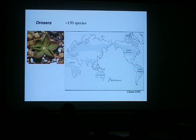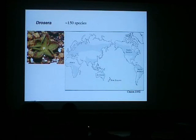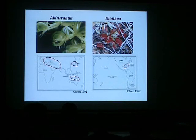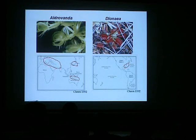Drosera has a worldwide distribution, but the vast majority of species are found in the Southern Hemisphere, especially in Australia, South Africa, and South America. Drosera have affixed traps and capture their prey with mobile glandular hairs present on the adaxial side of the leaves. Drosera and Aldrovanda share similar trapping mechanisms called a snap trap. Aldrovanda is a floating aquatic species found throughout the Old World, while Dionaea is a terrestrial plant endemic to coastal plains of North and South Carolina, United States.